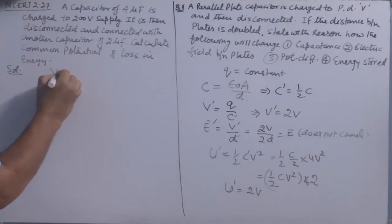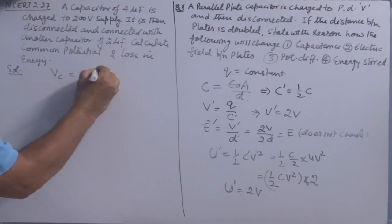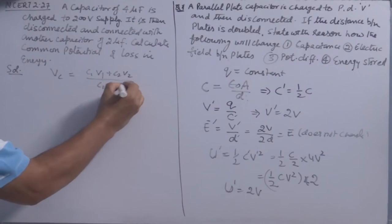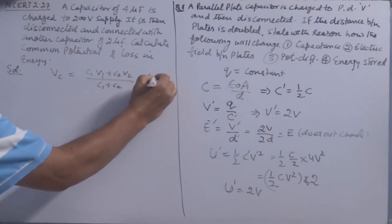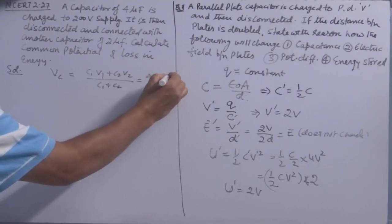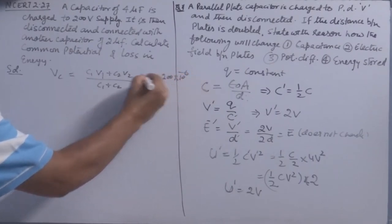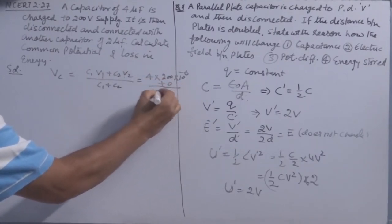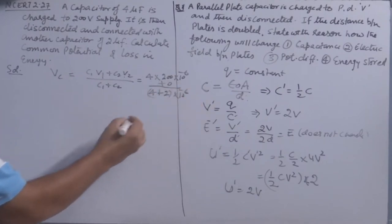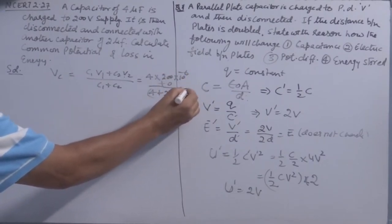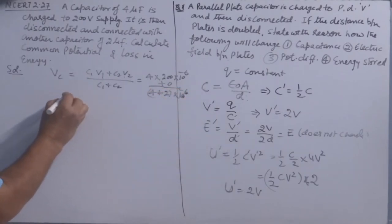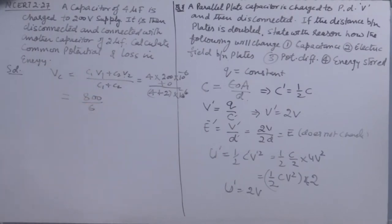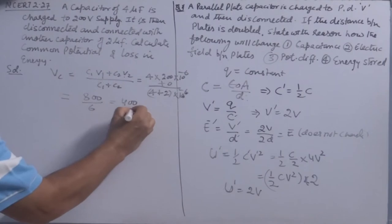The formula for common potential is V_c = (C₁V₁ + C₂V₂) / (C₁ + C₂). C₁ = 4 μF, V₁ = 200 V, C₂ = 2 μF, V₂ = 0. So V_c = (4 × 10⁻⁶ × 200 + 0) / (4 + 2) × 10⁻⁶. The 10⁻⁶ cancels, giving 800/6 = 400/3 volts.